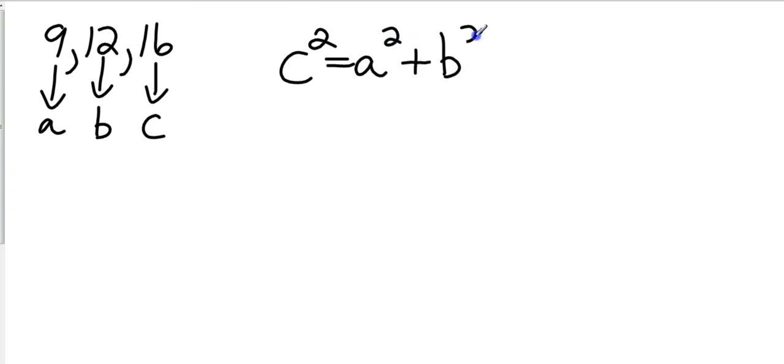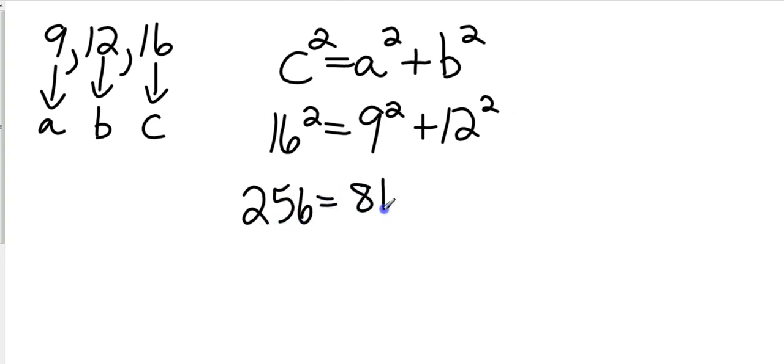And we're just going to substitute it in and see if it comes out to be true. So that's going to be 16 squared equals 9 squared plus 12 squared. 16 squared, as I look on my chart, is 256. 9 squared is 81. And 12 squared is 144.